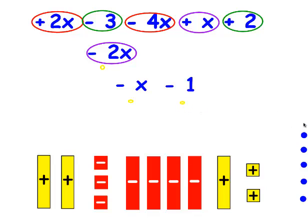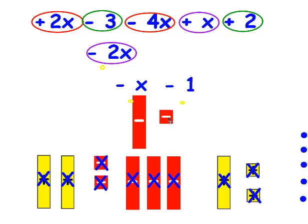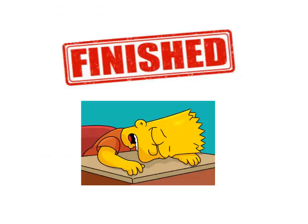Let's see how this works with our algebra tiles. I'm going to get rid of zero pairs, starting with my variables. They go, they go. I'm done getting rid of the variables that make zero pairs, but I have numbers. They go, they go, and they go. And that leaves me with negative X minus one. And that's it — good job!